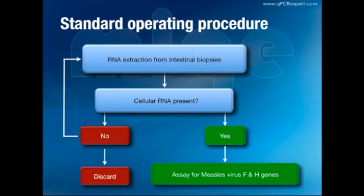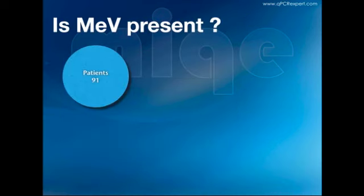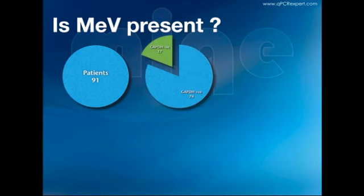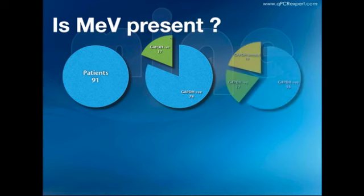The paper states that gene dosage correction was always carried out using GAPDH. In practice, they extracted RNA from intestinal biopsies, checked for cellular GAPDH RNA, and if not present, that sample was to be discarded. The SOP clearly stated: if no GAPDH is present, that sample is not to be used. When I was able to analyze their raw data, I found that of the 91 children reported, 17 were GAPDH-negative and should have been excluded, and in a further 19 cases I could find no evidence any GAPDH analysis had been carried out—leaving us with 55 samples.